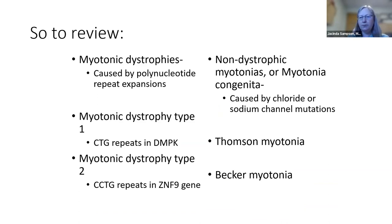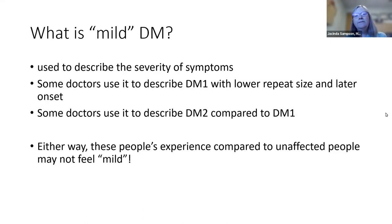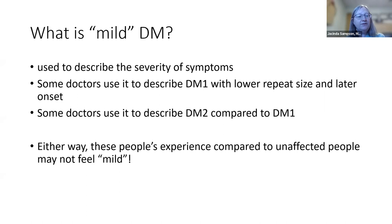To review: there's more than one myotonic dystrophy, both caused by polynucleotide repeat expansions. There are also non-dystrophic myotonias caused by mutations in ion channels — specifically chloride and sodium. Myotonic type 1 is caused by CTG repeats in DMPK; myotonic type 2 is caused by repeats in zinc finger 9 protein. The term 'mild myotonic dystrophy' can be misleading — if you have it compared to those who don't, it might not feel mild.